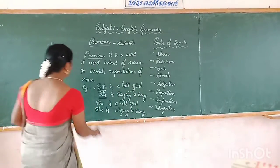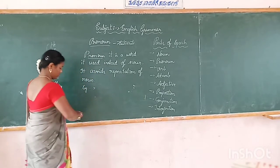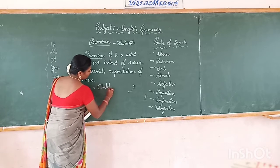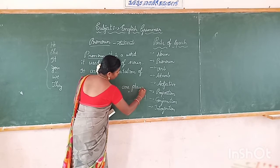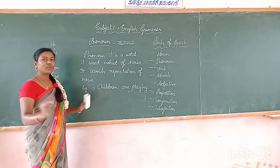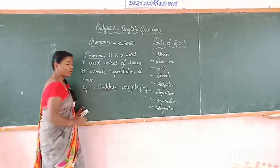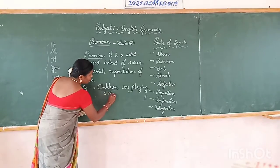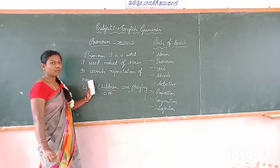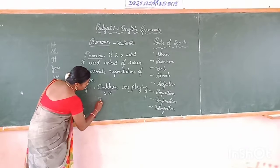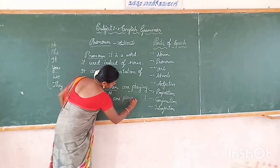I will give you another example. Look at the book. Children are playing. First, you identify the noun in this sentence. Which is the noun? Children — it is the noun. Which type of noun? Common noun. Children is a common noun. Instead of the noun, we use a pronoun. It is a plural noun, so we use 'they'. They are playing. Who are playing? Children are playing.